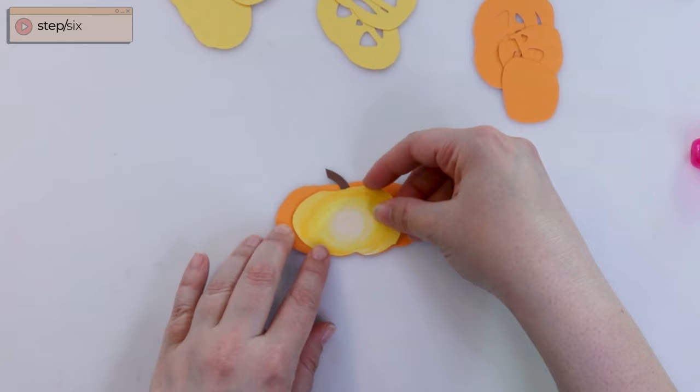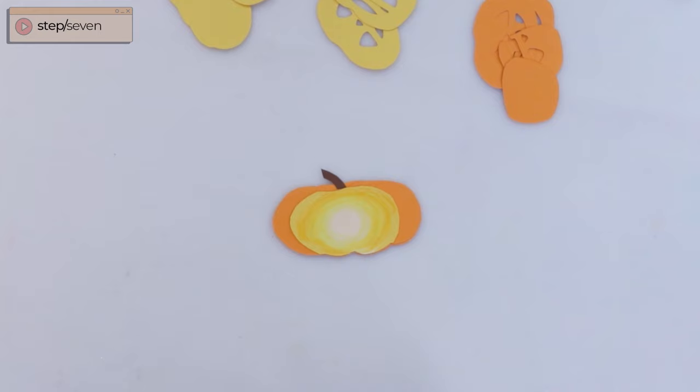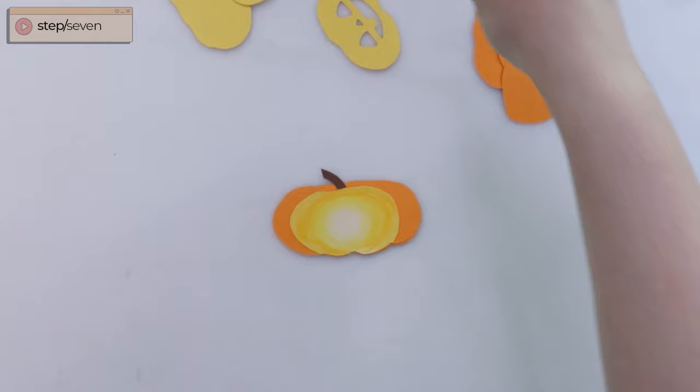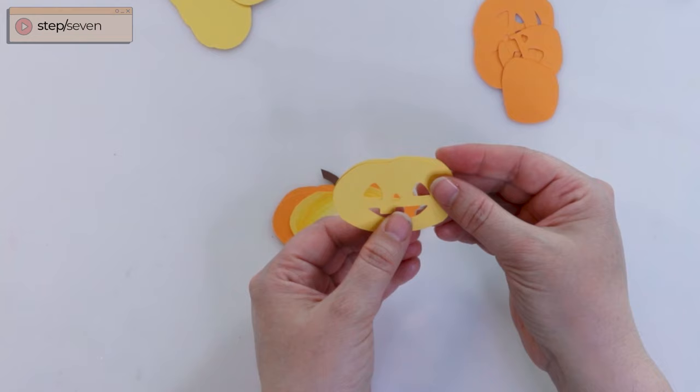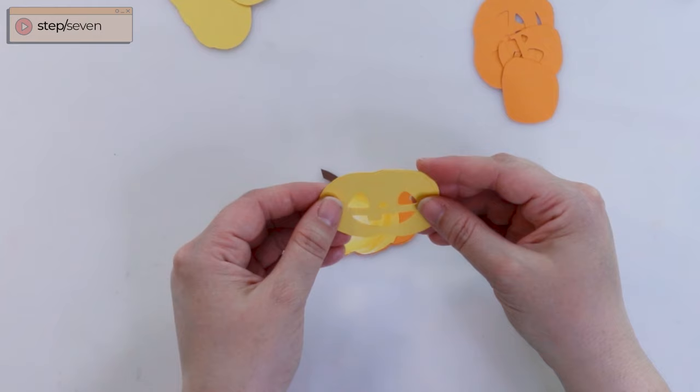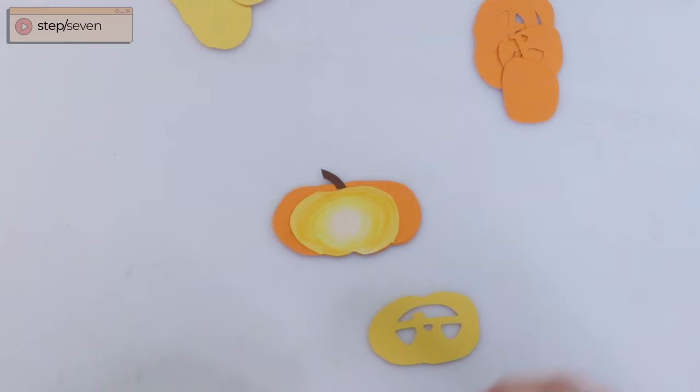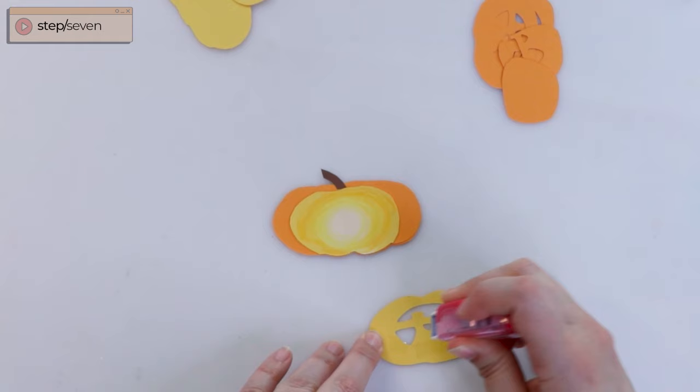Next we're going to be making our jack-o'-lantern's face. Now I want you to notice that there are actually two faces for your die cut pumpkin. You're going to notice that one face is slightly smaller than the other. This was designed on purpose, basically to help create an inner edge to our jack-o'-lantern's eyes, nose, and mouth. Make sure the larger shape is at the back and then the smaller face is towards the front as you can see me doing here. With your tape runner, attach the larger shape to your yellow glow.